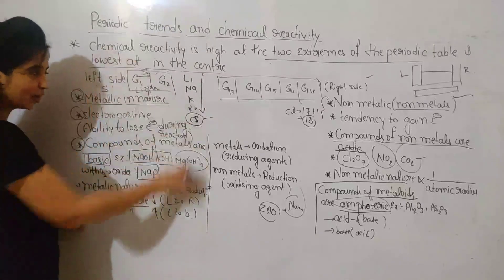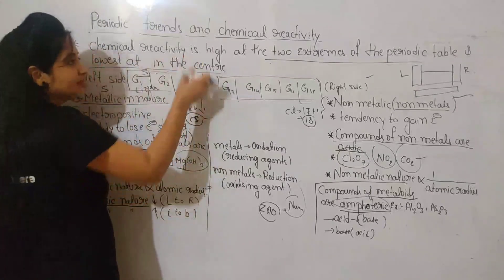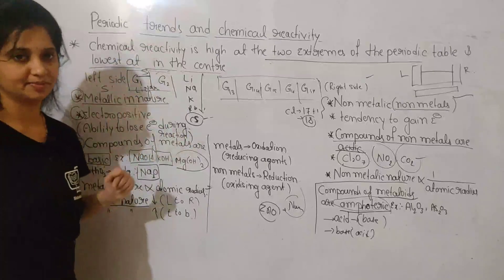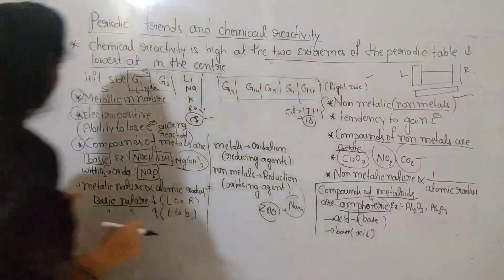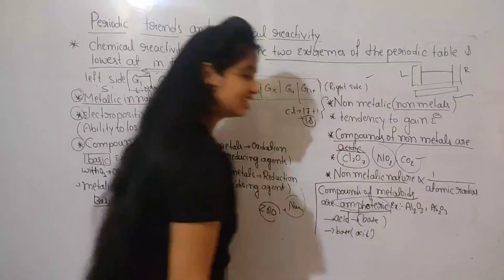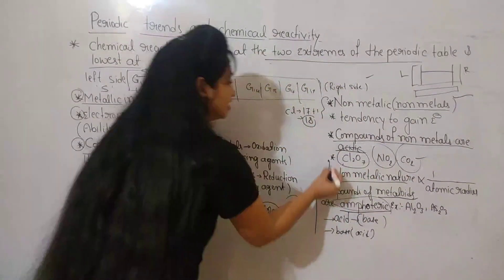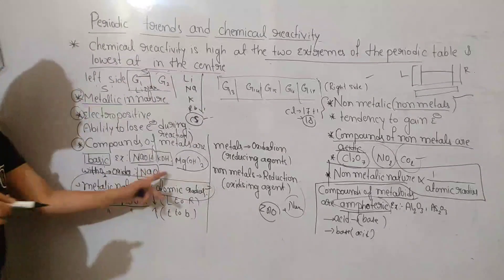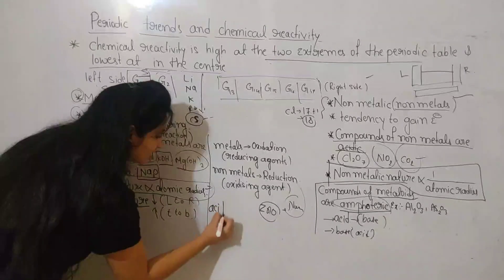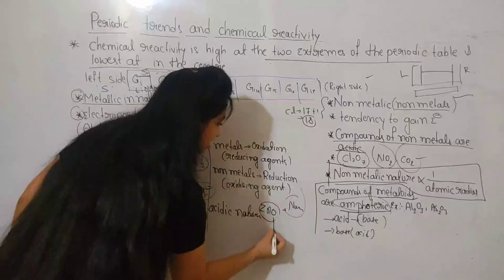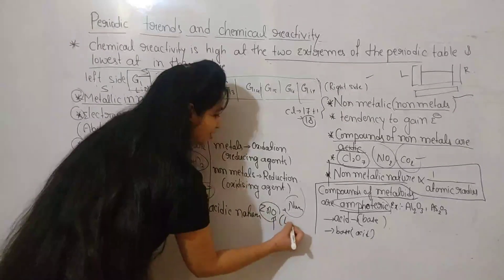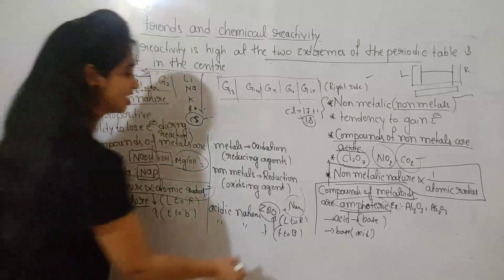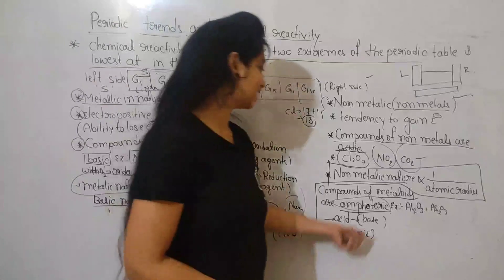The metallic nature and basic nature increase as we move from top to bottom. Conversely, non-metallic nature is inversely proportional to the atomic radius. Acidic nature increases as we move from left to right, and acidic nature decreases as we move from top to bottom. Remember these trends for acidic nature, basic nature, and metallic character.